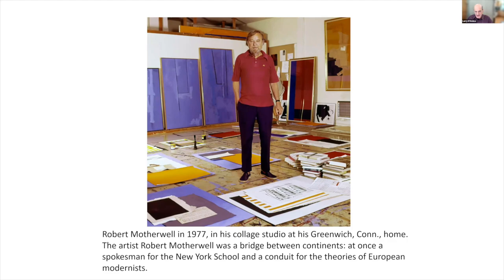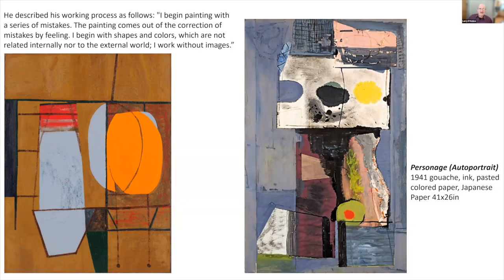Motherwell was a bridge between continents — a spokesman for the New York School and a conduit for the theories of European modernism. He described his working process: 'I begin painting with a series of mistakes. The painting comes out of the corrections of mistakes by feeling. I begin with shapes and colors which are not regulated internally nor to the external world. I work without images.' In other words, he was putting marks down and adjusting them until he was satisfied.